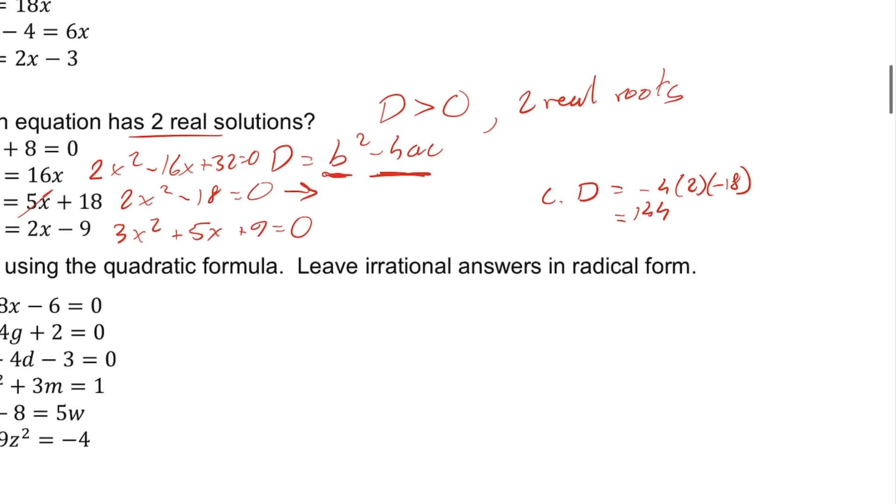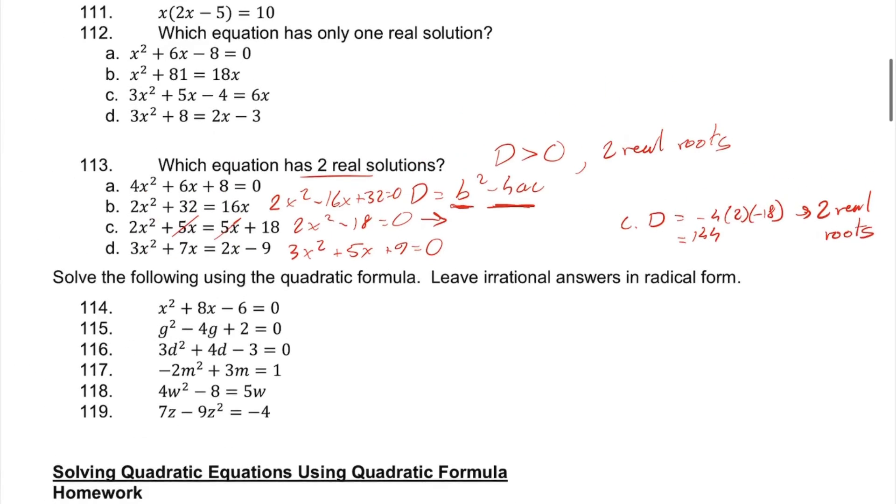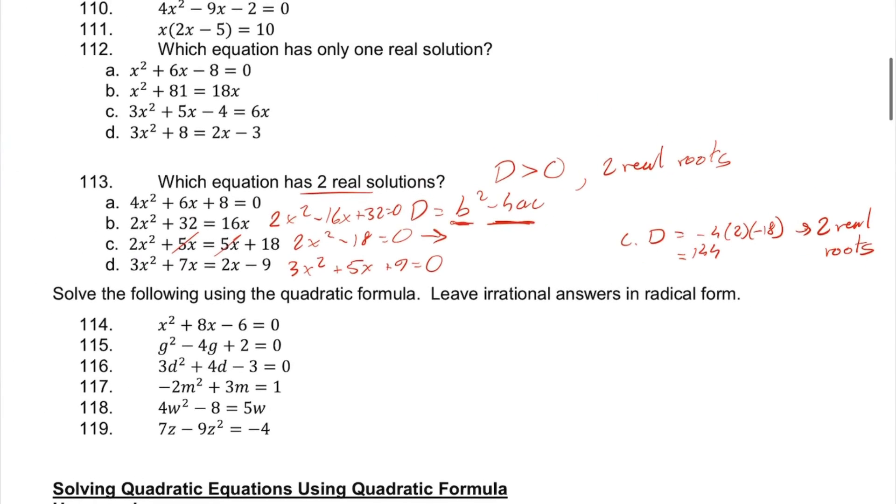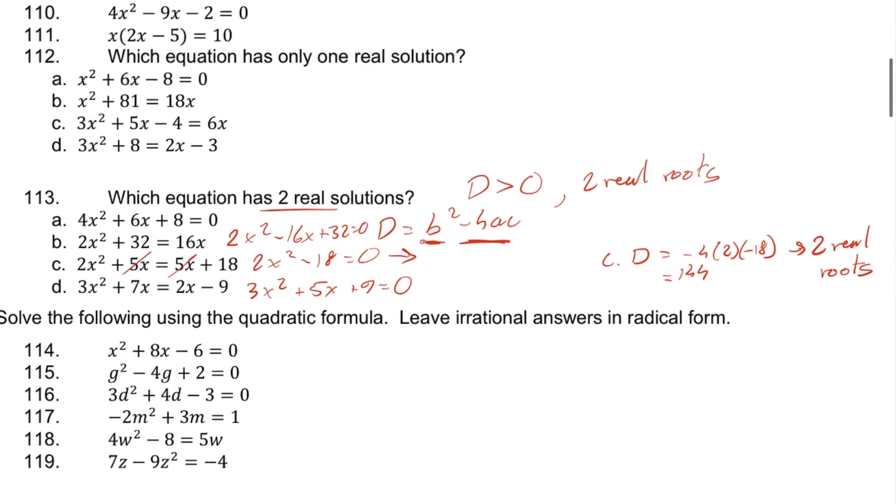So we know that c will have two real roots. And since we already found which one has two real solutions, we know that that is our answer.